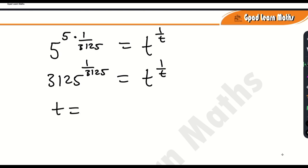So t is equal to 3125. That's the value of t that satisfies the equation. However, this is not the only real value — there's also another real value of t that satisfies the same equation. In another video I'll show how to use the Lambert W function to find both real values. I hope you got value from this video — please subscribe for more content like this. See you in the next one, bye for now.